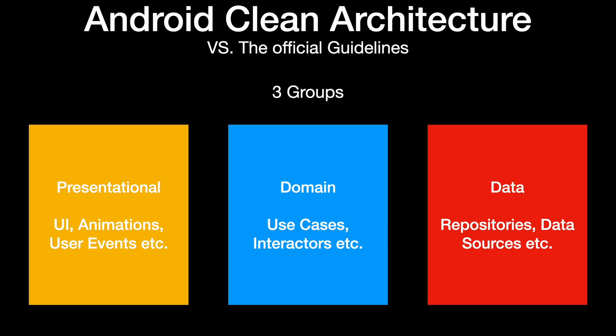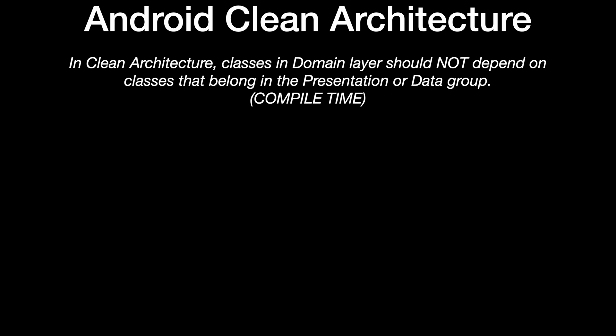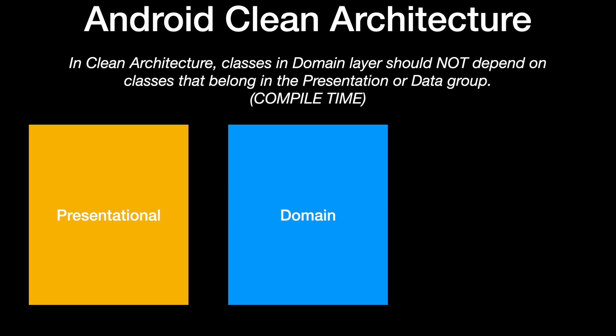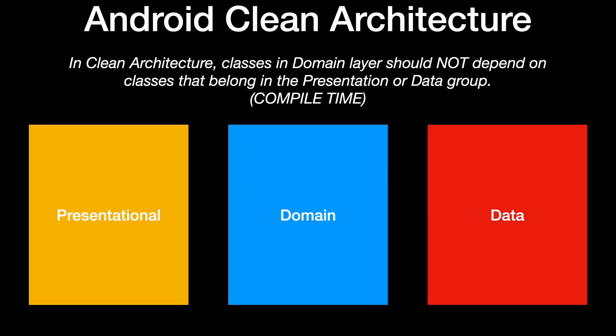The goal would be that the domain does not need to know where the data comes from. This next sentence is important: in clean architecture, the classes belonging in the domain group should not depend on classes from the presentation or data layer. Our business core functionality lies in the center, and every other class plugs into it. So we have a flow of compile-time dependencies where presentation points to domain and data also points to domain.